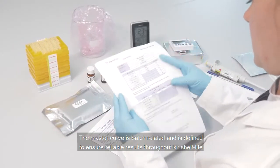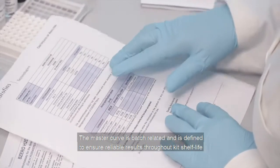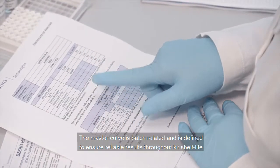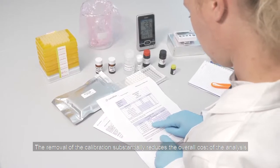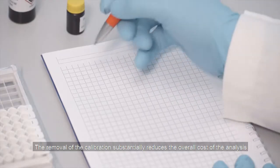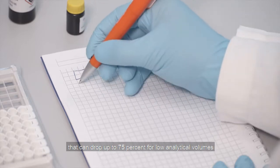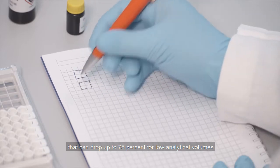The master curve is batch-related and is defined to ensure reliable results throughout kit shelf life. The removal of the calibration substantially reduces the overall cost of the analysis. That can drop up to 75% for low analytical volumes.